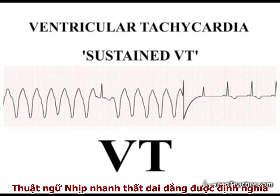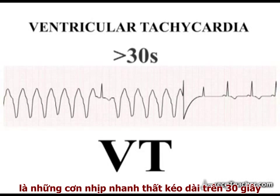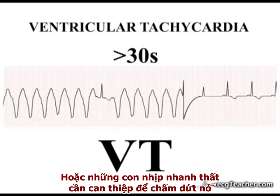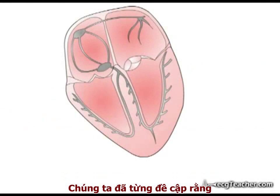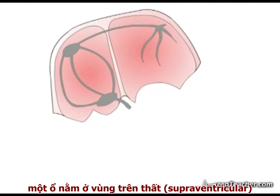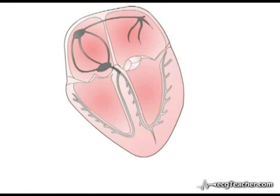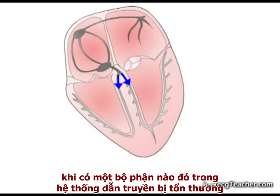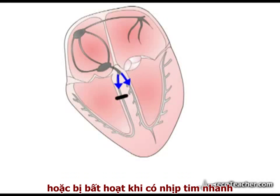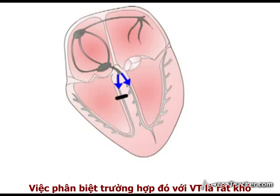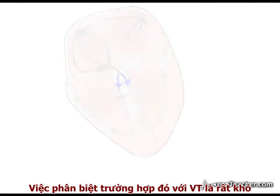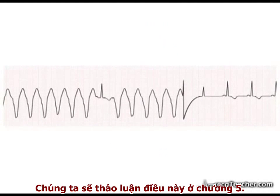The term sustained ventricular tachycardia applies to an episode of VT greater than 30 seconds in duration, or as in our case, an episode requiring clinical intervention for termination. We have already mentioned that it is possible for a focus situated in the supraventricular region to generate a broad complex tachycardia. This situation arises if a component of the ventricular conducting system is damaged or fails to function at higher heart rates. Distinguishing such a broad complex tachycardia from VT is a major challenge, which we will discuss in section 5.